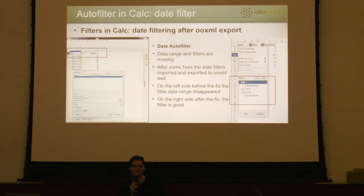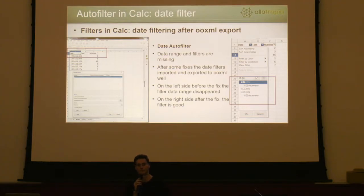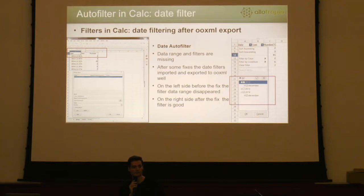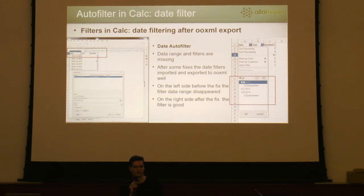On the left side, you can see that after an OXML import, the data range and the autofilter arrows are completely disappeared. So the hidden rows cannot be made visible again, only if you create a new filter on that range or manually make the hidden rows visible. On the right side, you can see the results after the filter fix. The filtering works well and the correct values are checked and unchecked in case of all date and time filters. They are imported and exported correctly to OXML as well.